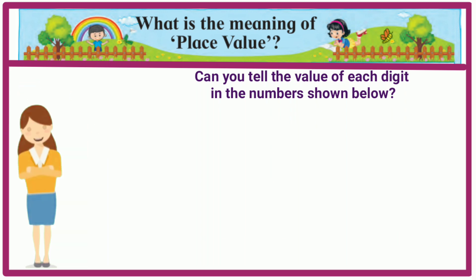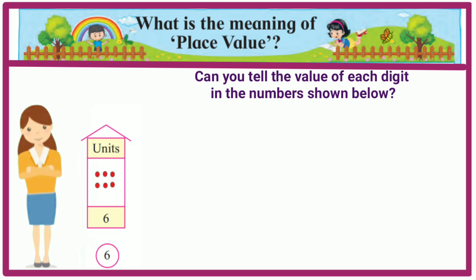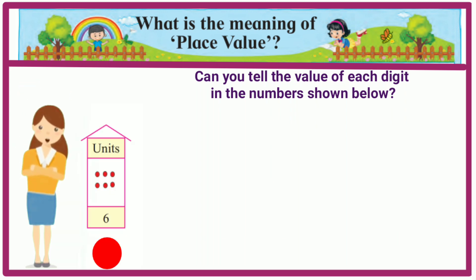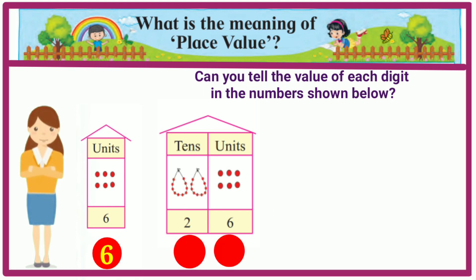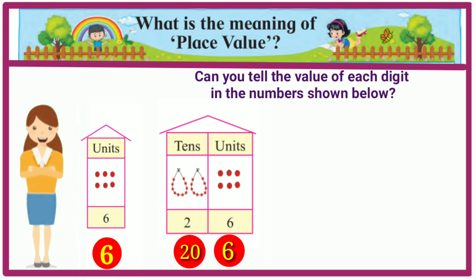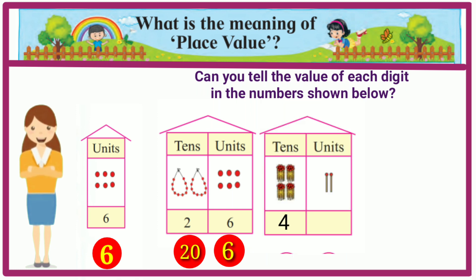Can you tell the value of each digit in the numbers shown below? Here we see 6 units, so the place value of 6 is 6. Let's see another example: 26. The place value of 2 is 20 and the place value of 6 is 6.